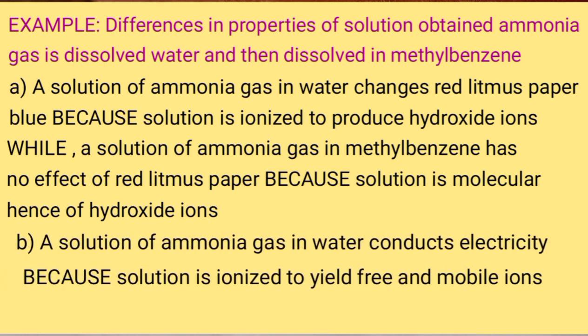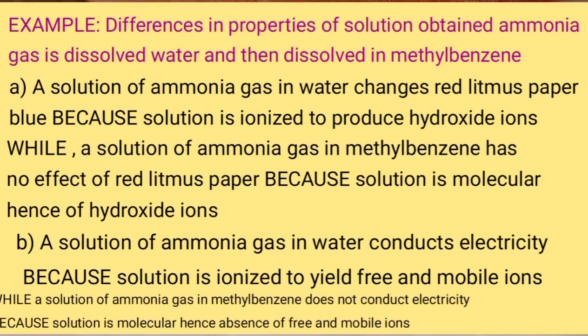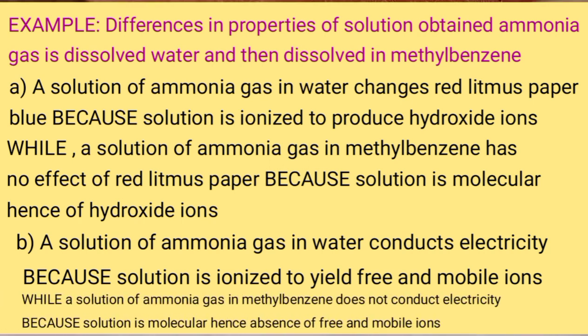A solution of ammonia gas in water conducts electricity because the solution is ionized to yield free and mobile ions. A solution of ammonia gas in methylbenzene does not conduct electricity because the solution is molecular, with an absence of free and mobile ions.